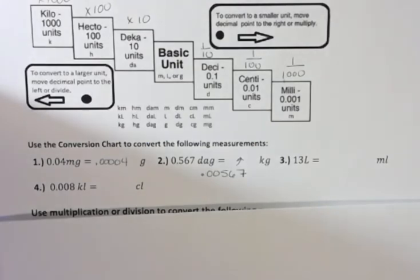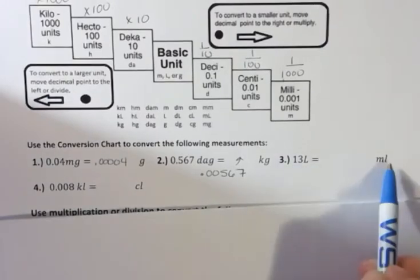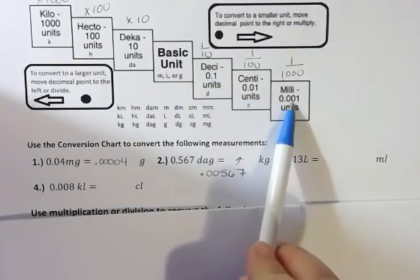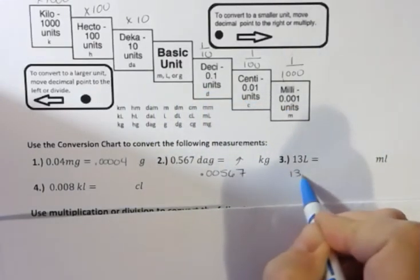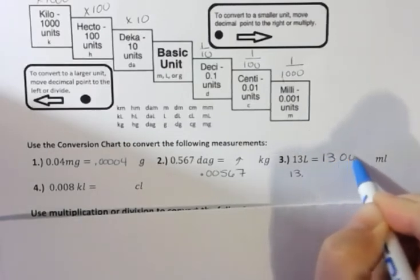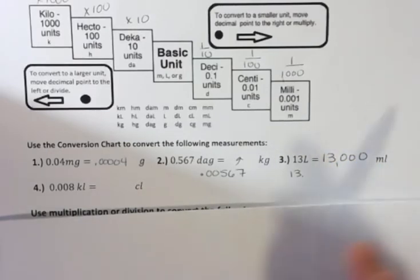Thirteen liters to milliliters: well, here's where liters are, and we're going to go three places to the right. Remember, the decimal point is at the end, so we're going to move that three places over and we're going to end up with thirteen thousand milliliters.